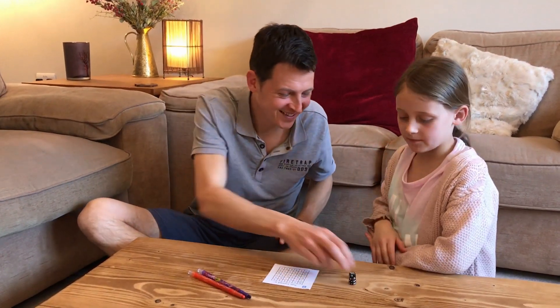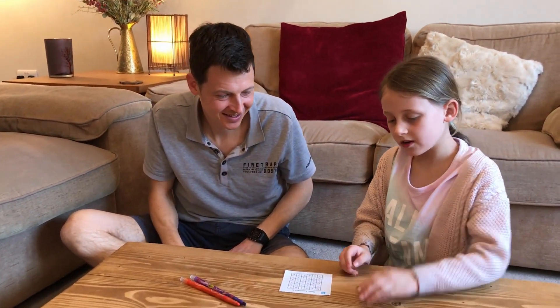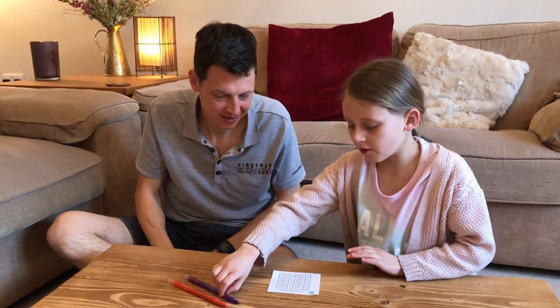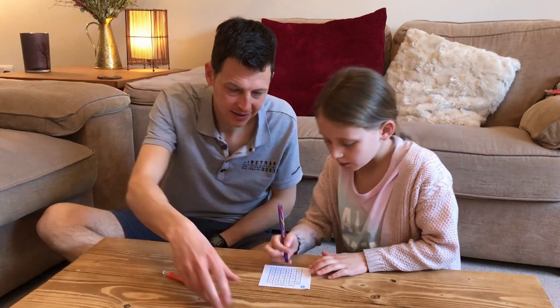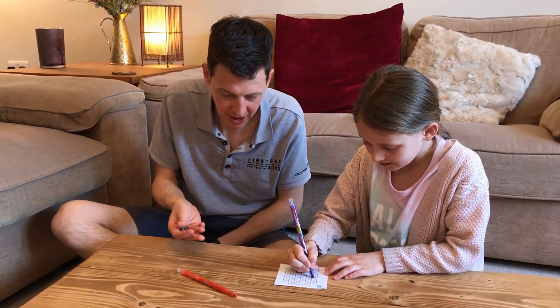Do you want to have the first go? Yes, so that's four and that's a six. So four and six is ten. I'm going to choose this ten. Okay and it's my go.